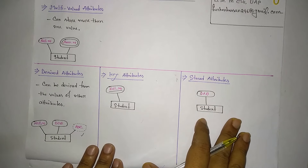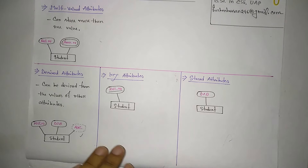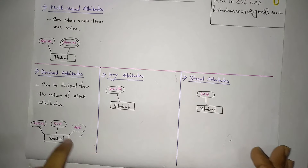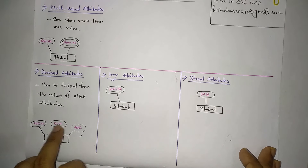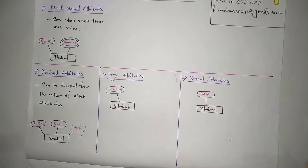For derived attributes, the value can be calculated. For example, date of birth can be used to calculate current age. Similarly, salary — if you want to calculate average salary, or 10% of salary, that can also be derived through calculation.